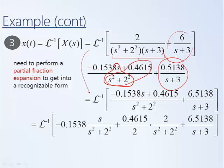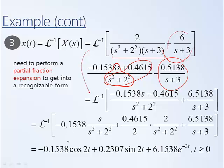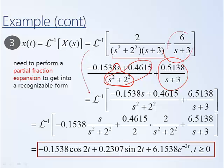At this point we have rearranged everything into a form where we can recognize each term in our Laplace transform pairs table. The constant comes out front; the inverse Laplace transform of that term is a cosine where omega is 2, so it's cosine 2t. Then we have another constant out front; the inverse Laplace transform of the next term has the form sine omega t where omega is again 2. The final constant comes out front, and this term has the form 1 over s plus a where a equals 3, so the inverse Laplace transform is e to the minus 3t. We make the assumption that our time-based functions don't begin until t is greater than 0. This is our final solution.